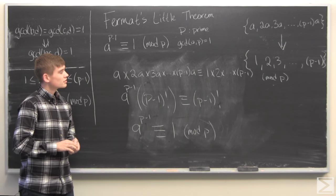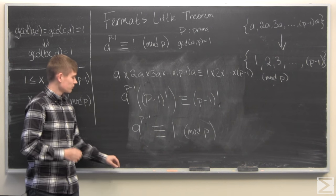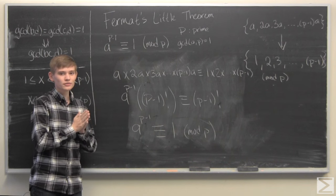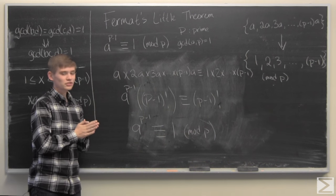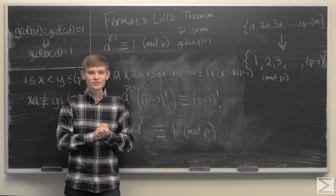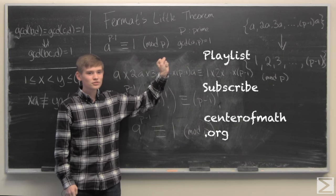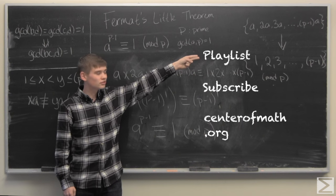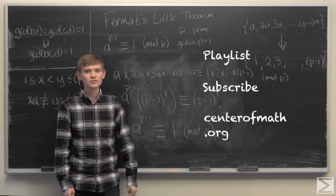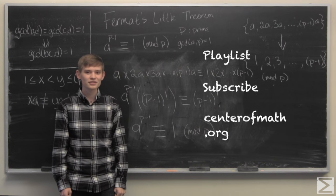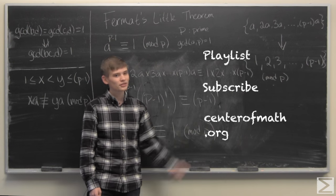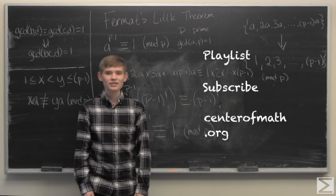And that is one proof of Fermat's Little Theorem. There are many proofs out there, so if you have another one, send it to us and we'll check it out. And that is this week's Advanced Knowledge Problem of the Week. To view more videos like this, you can click right there. To subscribe to our YouTube channel, you can click right there. To visit centerofmath.org, you can click right there. And if you're on a mobile device, there is an 'i' in the top right-hand corner of the screen with all of the same links. Thank you very much.